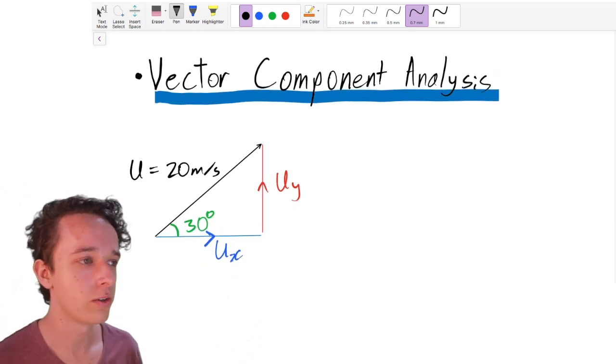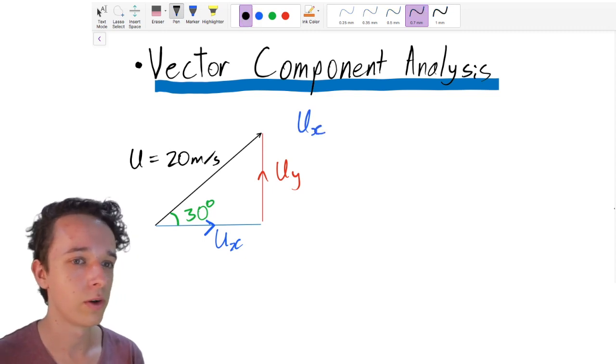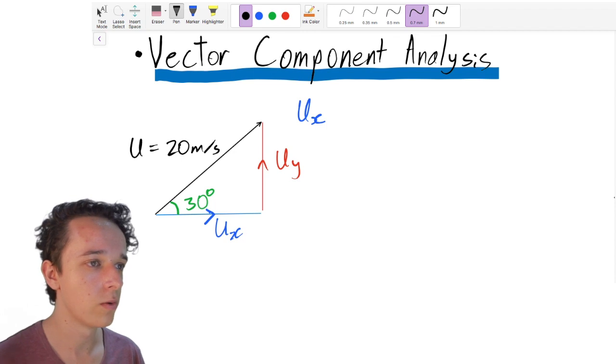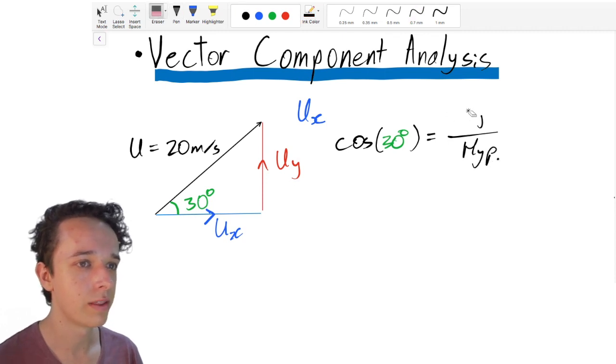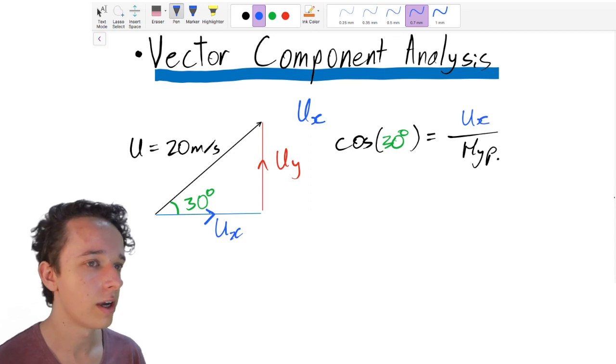So now onto vector component analysis. Say you're given that a velocity vector has a magnitude of 20 meters per second with an angle to the horizontal of 30 degrees. And you're asked to find firstly, you're asked to find u of x. So first we employ trigonometry in order to think about, well, how is u of x related to the 30 degrees and related to the 20 meters per second here. So we know that cos of a particular angle, in this case 30 degrees, is equal to adjacent over hypotenuse. And in this case, the thing which is adjacent to the angle is u of x, the thing that we're trying to find. And in this case, the hypotenuse is this 20 meters per second here. So we write 20 meters per second in the denominator.